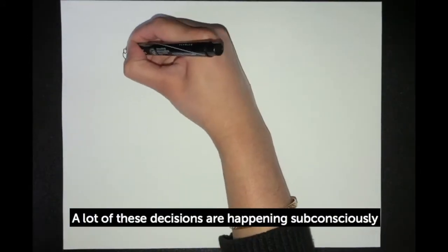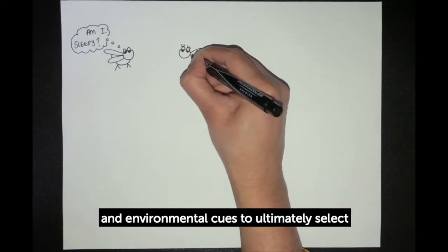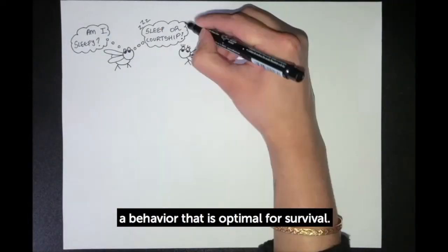A lot of these decisions are happening subconsciously, by circuits in the brain integrating internal states and environmental cues, to ultimately select a behavior that is optimal for survival.